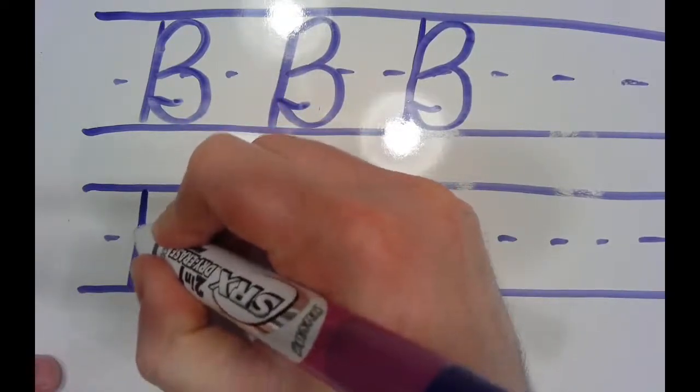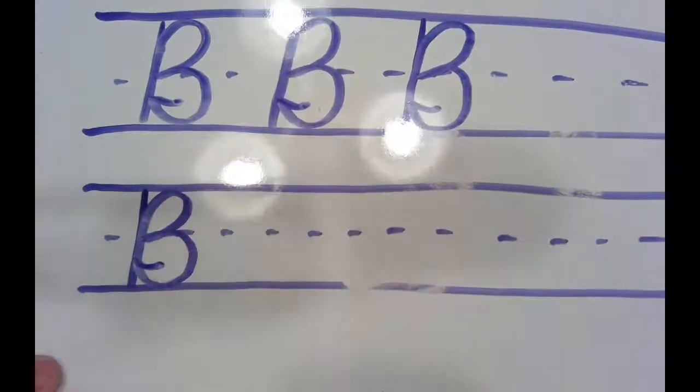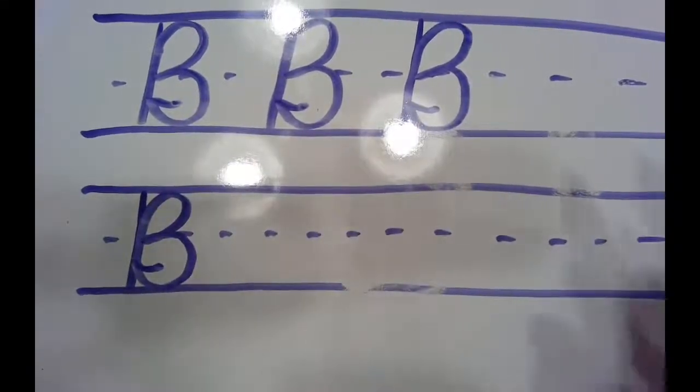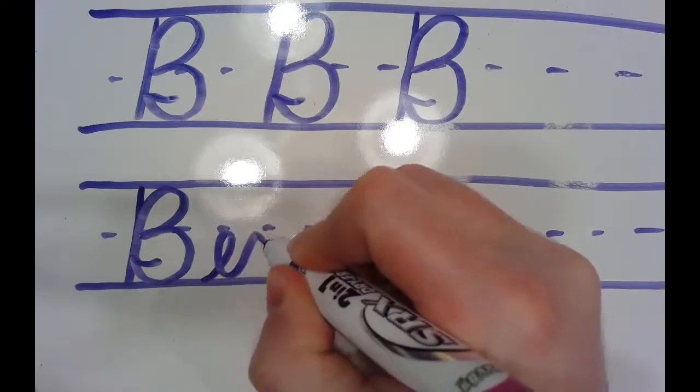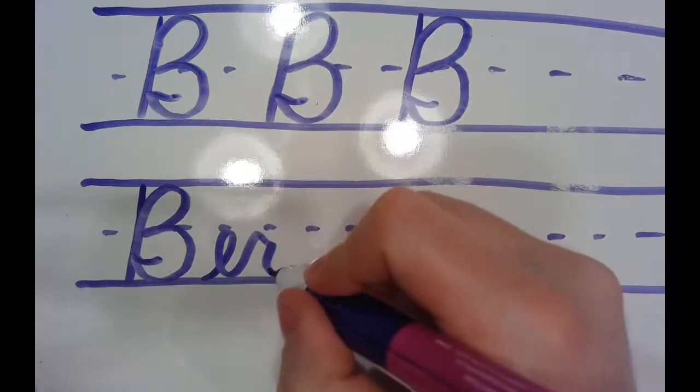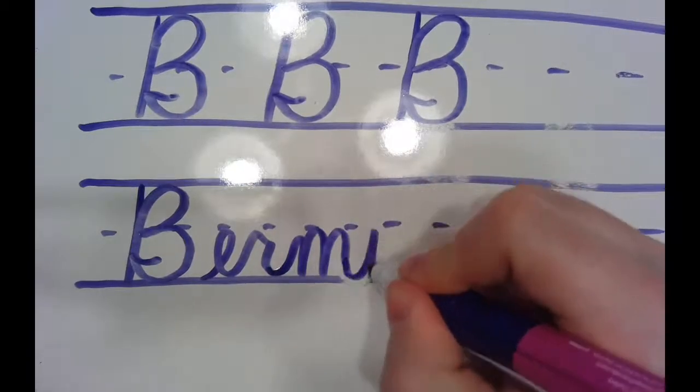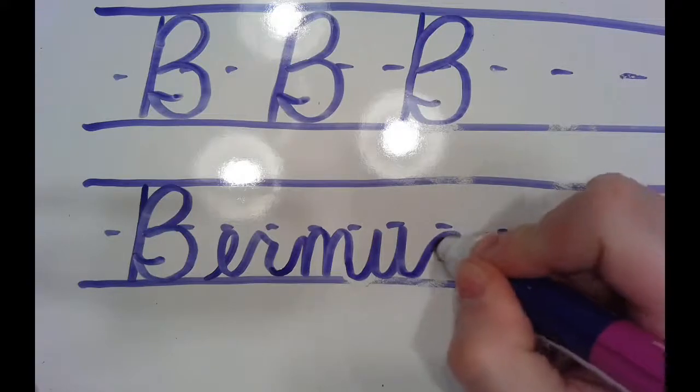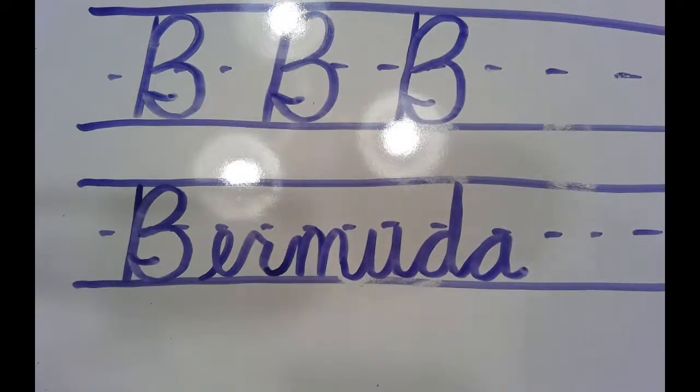Today we're going to write the word Bermuda. Bermuda is an island country. Probably would be a pretty nice vacation destination, beaches and oceans and stuff. Starting with that capital B and drowned out by the noise of the Samsung washing machine. With our hook, we're not going to connect. So over here we're going to do our next letter. E, R. I'm not a big fan of that R I just made, but we'll keep moving on. M, U, D, A. Bermuda. Pause the video, rewind, whatever you need to. Keep practicing those B's.